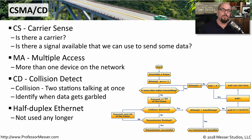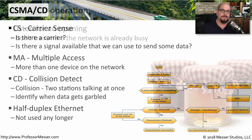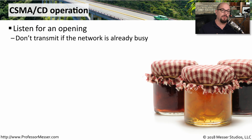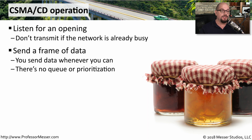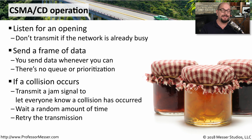CSMA/CD is commonly referenced when discussing half duplex ethernet communication. On today's modern switch networks, almost all devices are configured as full duplex and will not be using CSMA/CD. On a shared half duplex network, the CSMA/CD operation starts with the device listening to make sure no one else is communicating. If the network is clear, a device tries to send — there's no queue, no prioritization, devices simply try to send if the signal is clear. If two devices send simultaneously, both hear the collision, send a jam signal to clear the network, then wait a random amount of time and try again.